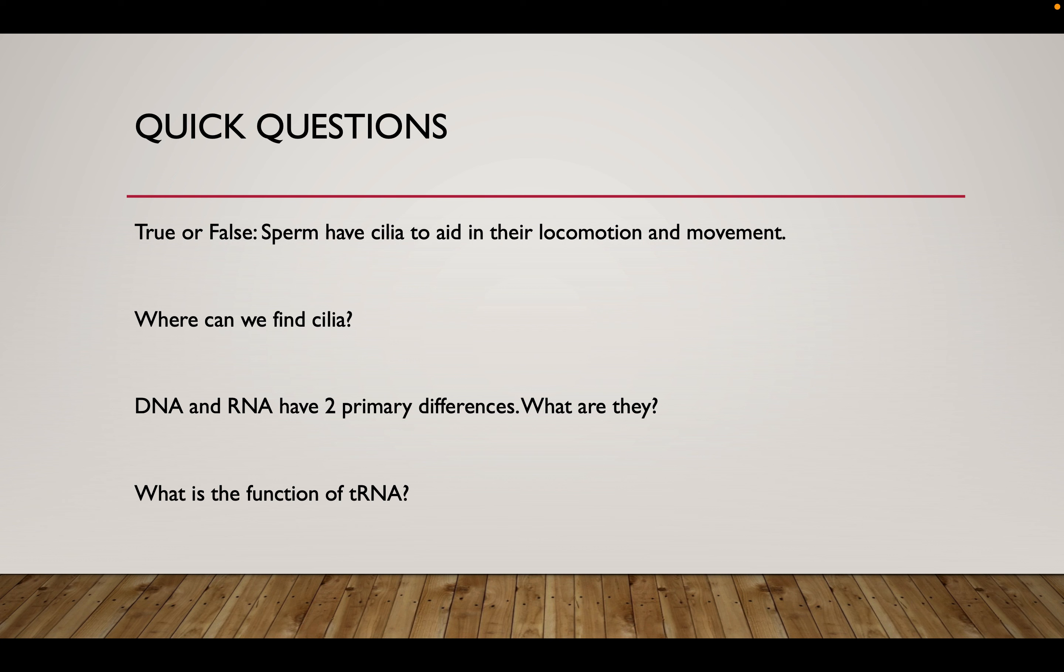Where can we find cilia? We can find cilia in our respiratory tract. One location I didn't mention, in the fallopian tubes or the uterine tubes of females, there are simple columnar cells. And these simple columnar cells are lined with cilia. And these cilia help to beat and propel the ovulated egg down the fallopian tube as it makes its way toward the uterus for implantation if it was fertilized.